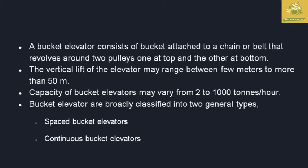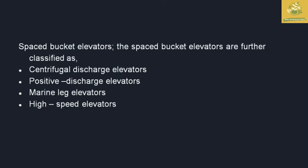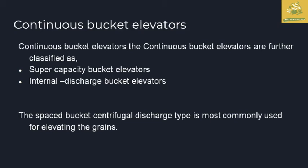The capacity of a bucket elevator ranges from about 2 tons to 1000 tons per hour. There are two general types of bucket elevators: the first is the spaced bucket elevator and the second is the continuous bucket elevator. Spaced bucket sub-types include centrifugal discharge, positive discharge, marine leg, and high speed elevators. Continuous types include super capacity and internal discharge elevators.